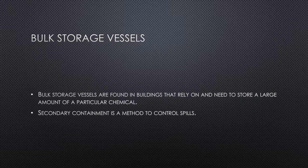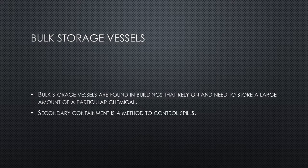Bulk storage vessels include fixed tanks, highway cargo tanks, rail tank cars, totes, and intermodal tanks — found in buildings that need to store large amounts of a particular chemical. Secondary containment is an engineered method that controls spilled or released product if the main containment vessel fails. More corrosive chemicals typically have secondary containment vessels as well.